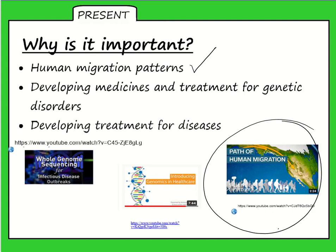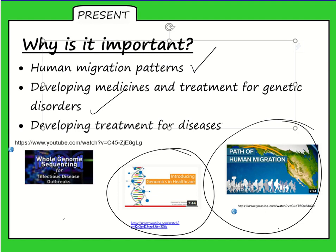We can also use this technology for developing medicines and treatment for genetic disorders. For people with type 1 diabetes or genetic disorders like cystic fibrosis, scientists can locate the gene and work towards replacing it with a healthy gene through gene therapy, or modifying the gene so it doesn't cause harm. Genome mapping can also be used for treatment of communicable diseases like coronavirus — by mapping its genome, enzymes or other technology can be used to break it up and stop it from reproducing and infecting.